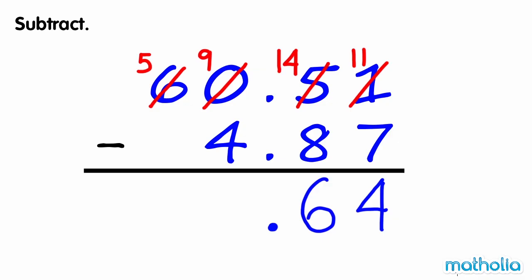Subtract the ones. 9 ones minus 4 ones equals 5 ones. Subtract the tens. 5 tens minus 0 tens equals 5 tens. So 60.51 minus 4.87 equals 55.64.